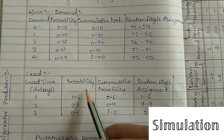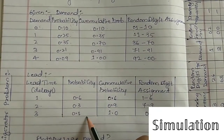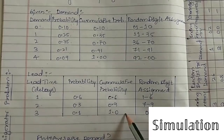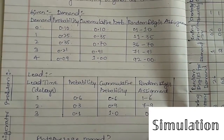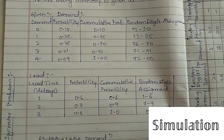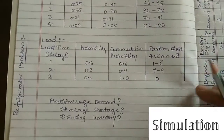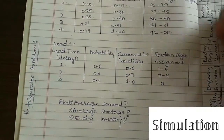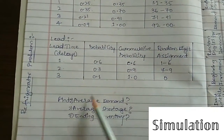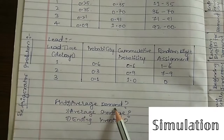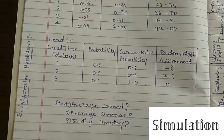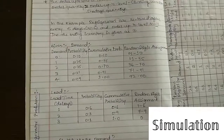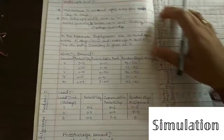Similarly, for lead time, cumulative probability and random digit assignment are also calculated. They have asked you to find the average demand, shortage, and ending inventory.